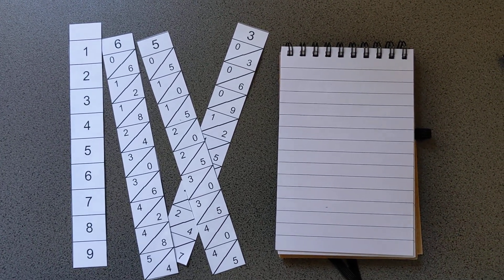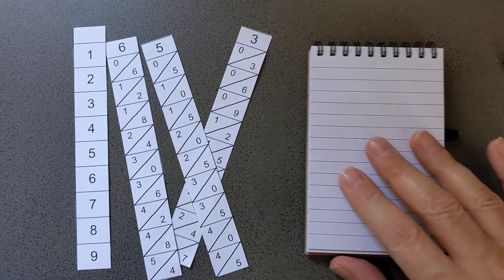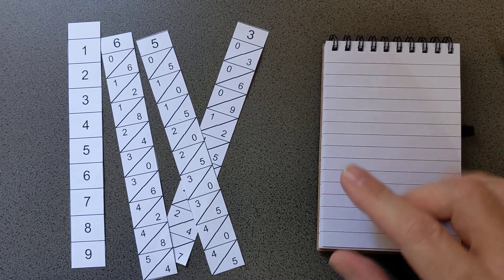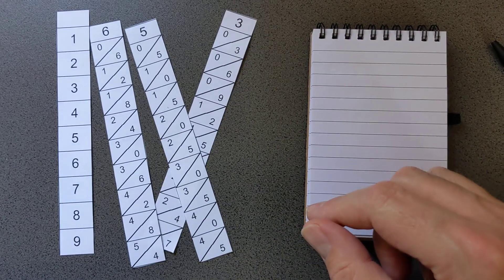So these are Napier's bones. The original ones were made of wood or ivory, hence the name. What you had is a set of sticks, each with a digit at the top.